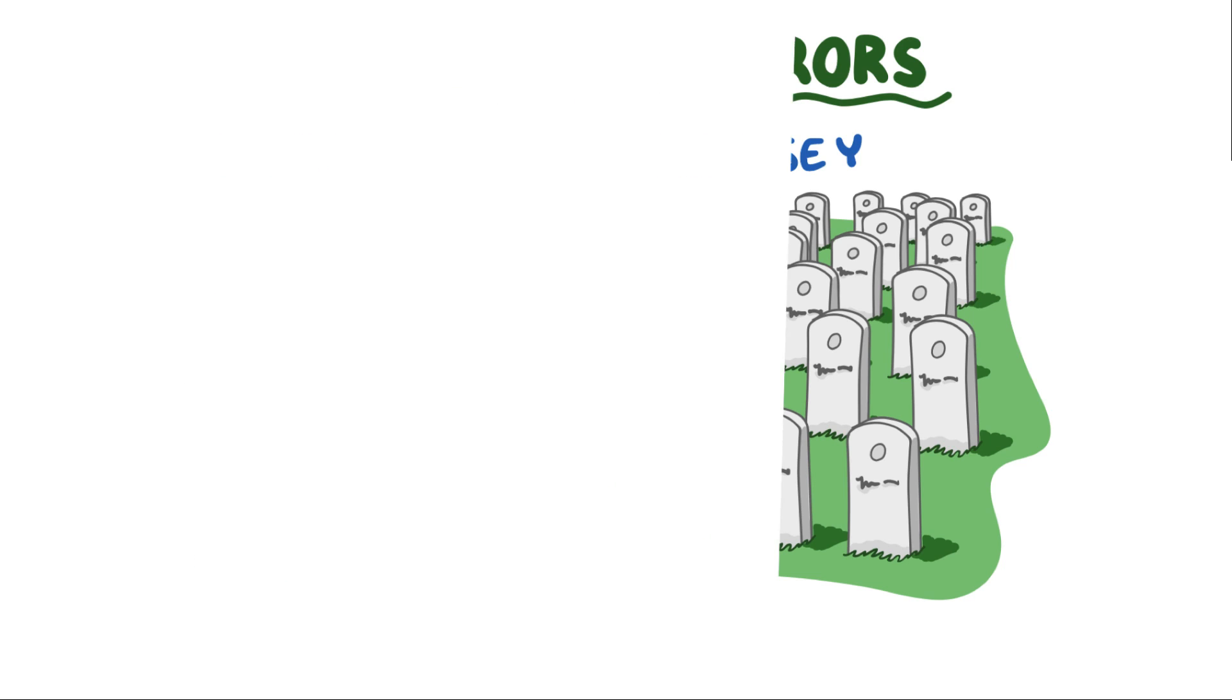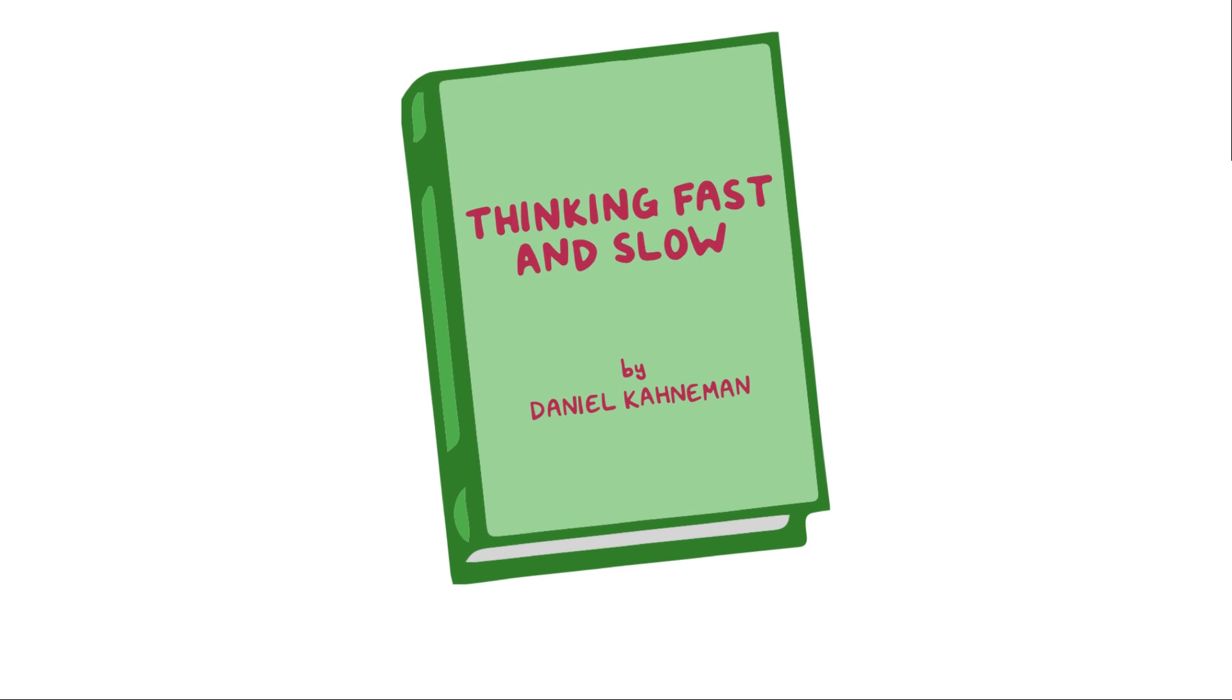One way to minimize these errors was popularized in the book Thinking Fast and Slow by Daniel Kahneman, which discusses System 1 and System 2 thinking.